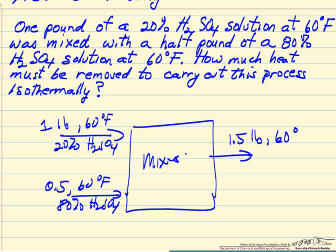We want it to be at 60 degrees, which means we may have to add or remove heat. And we need to calculate what's the composition. This is a weight percent.